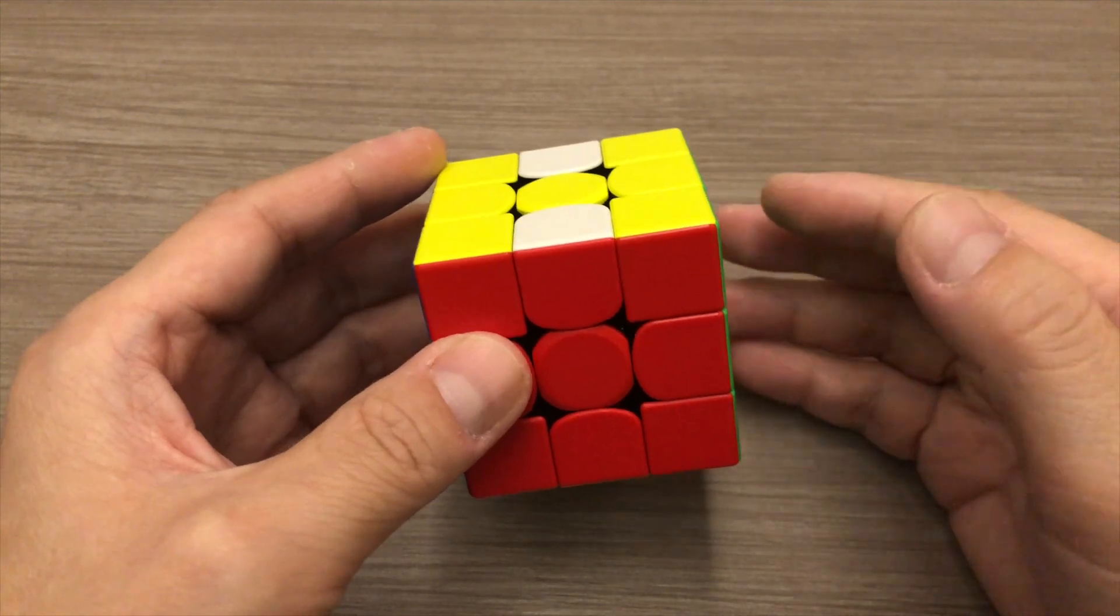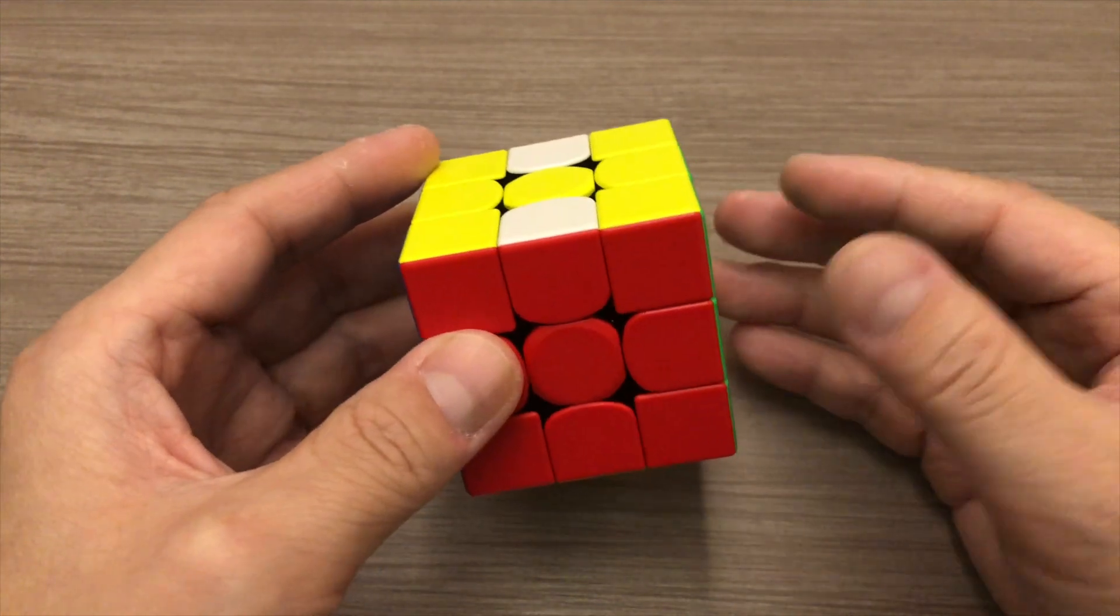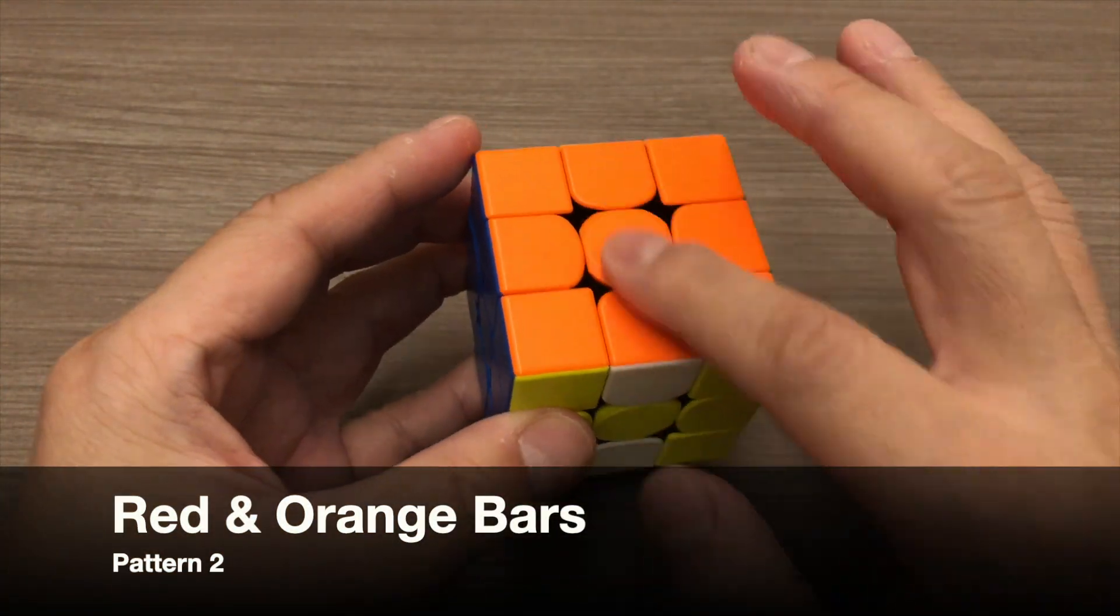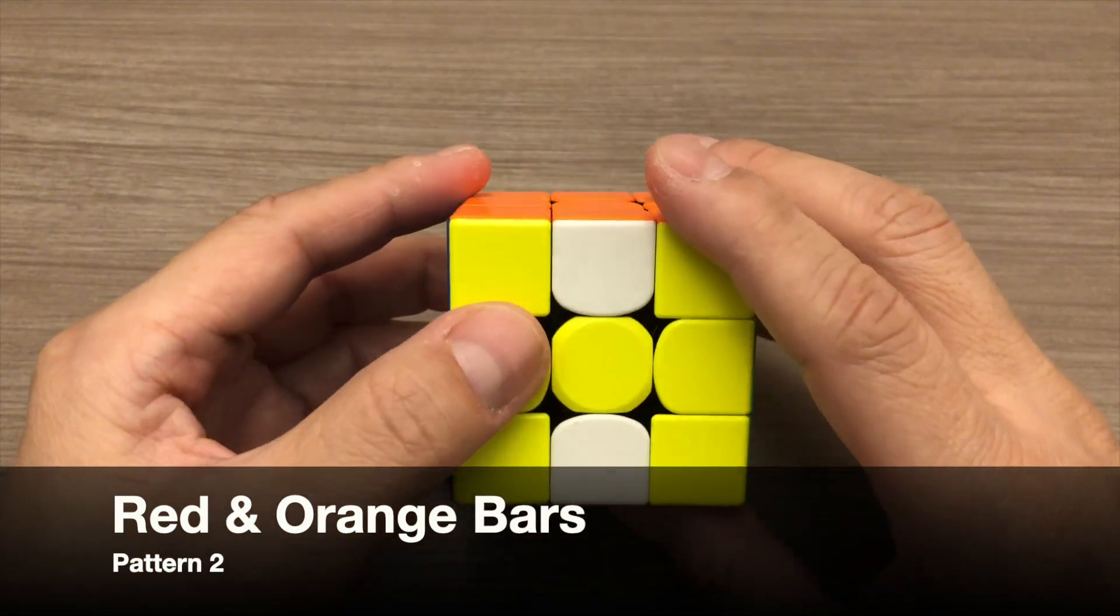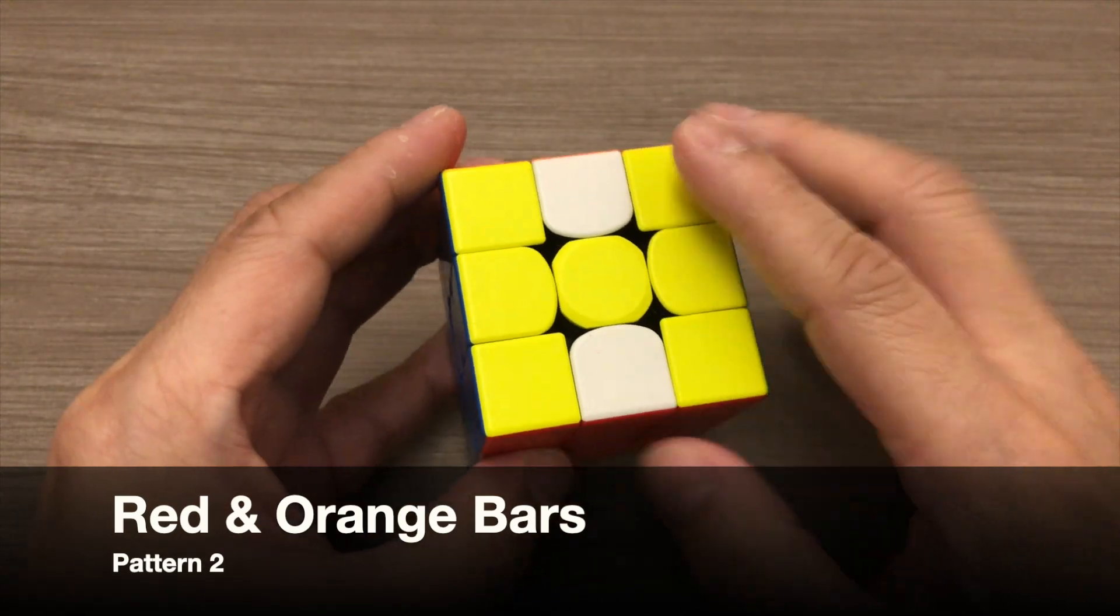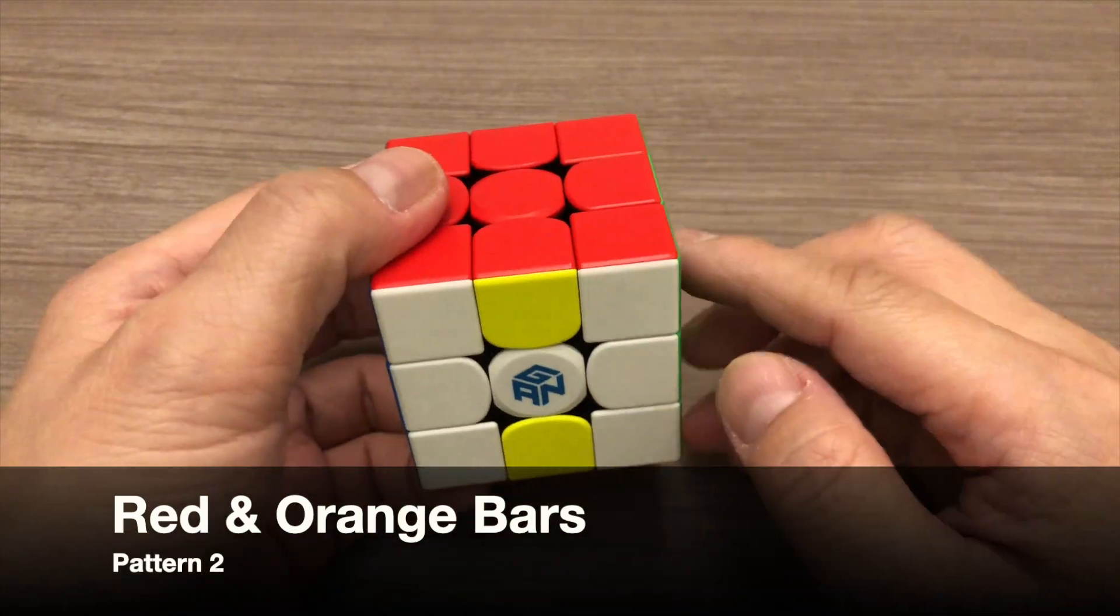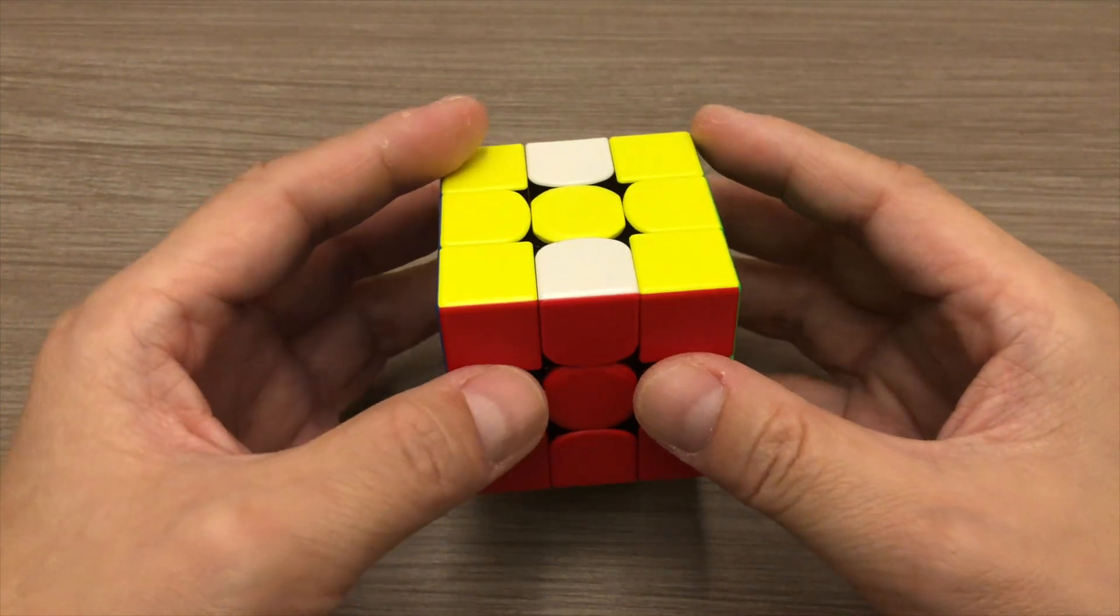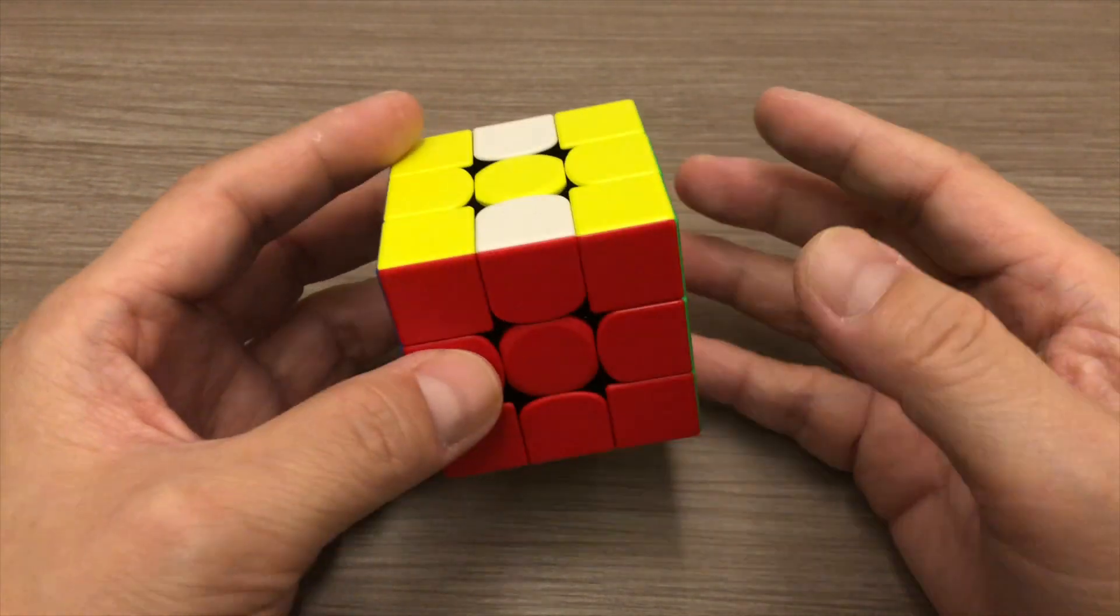The second pattern is quite similar to the first pattern except that this time, we have red and orange bars. And there are also defined patterns on the yellow and white faces of the cube. To solve this pattern, we will apply this algorithm.